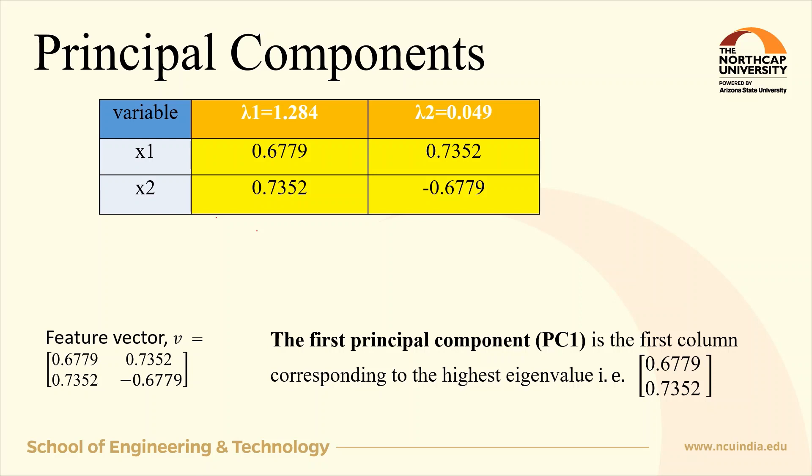Now comes the role of principal components. From the feature vector, we can obtain two principal components. The first principal component is the first column corresponding to the highest eigenvalue, and the second principal component is the second column corresponding to the second highest eigenvalue.